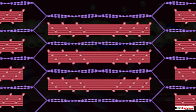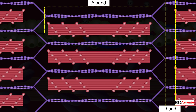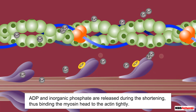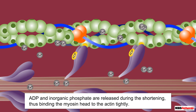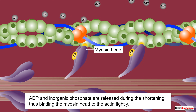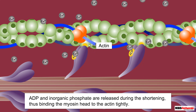This ultimately results in the shortening of the sarcomere, which is essentially the contraction of the muscle. There is a reduction of the I band during contraction while the A band remains the same length. ADP and inorganic phosphate are released during this shortening, binding the myosin head tightly to the actin.